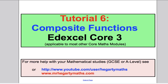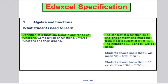Welcome to tutorial 6 on composite functions as they come up in the Edexcel Core 3 Maths A-Level course, but applicable to most other Core Maths A-Level modules. Looking at the Edexcel specification, so far we've defined a function as a one-to-one or many-to-one mapping from the real numbers to the real numbers and we've talked about the domain and range of functions and how to find it, as well as the notation of functions.